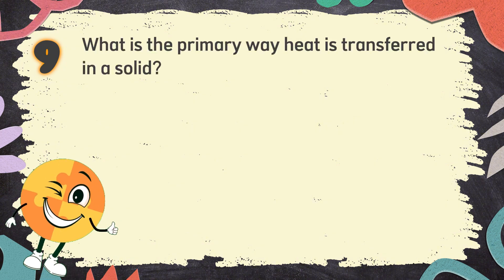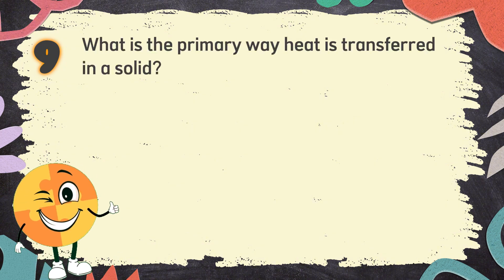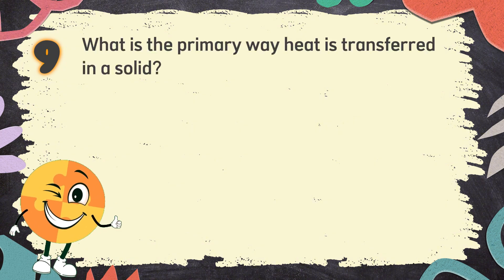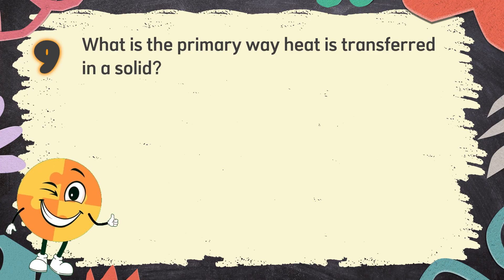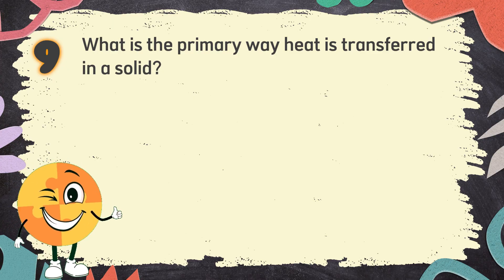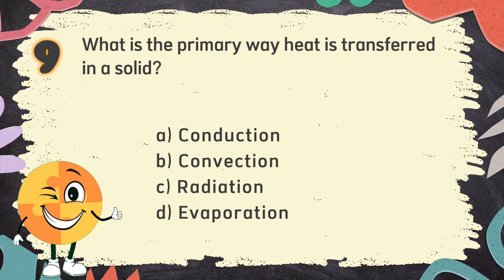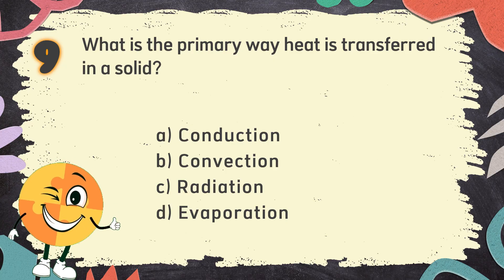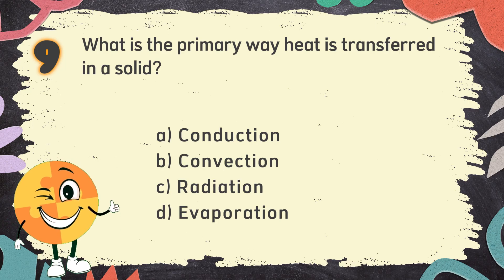Number 9. What is the primary way heat is transferred in a solid? The choices are: A. Conduction, B. Convection, C. Radiation, D. Evaporation.